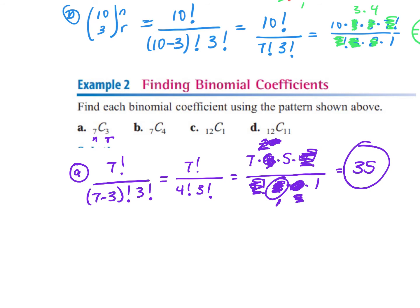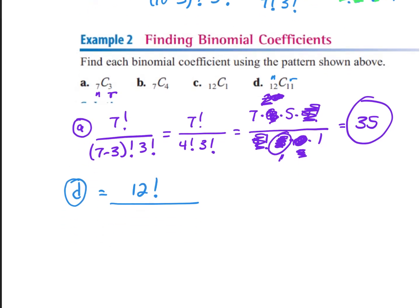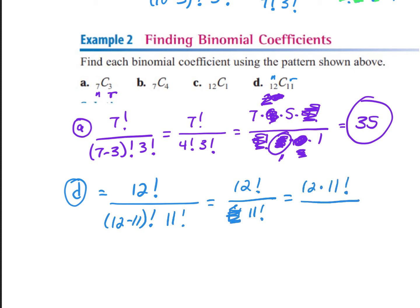Let's do D: it's 12 over 11, so N is 12 and R is 11. I have 12 factorial over 12 minus 11 factorial times 11 factorial — that's 1 factorial times 11 factorial. 1 factorial is 1, so I cross that out and have 12 times 11 factorial over 11 factorial. The 11 factorials cancel, leaving just 12. Even though it has the biggest numbers, it's actually the easiest one to do.